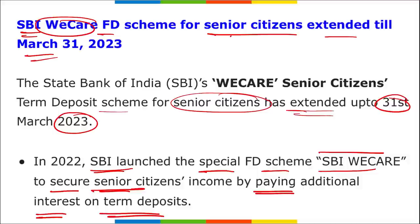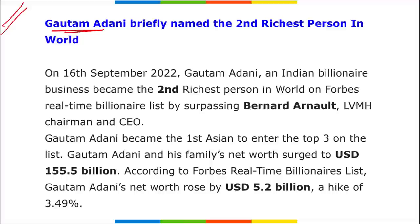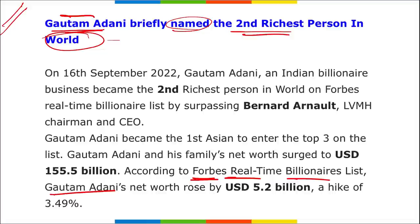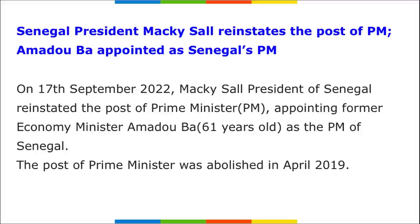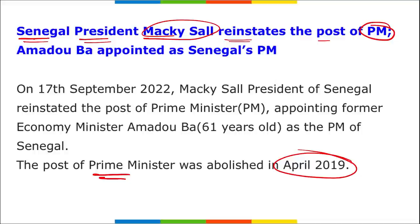Gautam Adani was briefly named the second richest person in the world, just after Elon Musk. According to Forbes' real-time billionaires list, Adani's net worth rose by $5.2 billion — a hike of 3.49%. Senegal President Macky Sall has reinstated the post of Prime Minister, which had been abolished in April 2019. In May 2022, the Senegalese parliament approved a constitutional reform abolishing the PM post, but now it has been reinstituted.